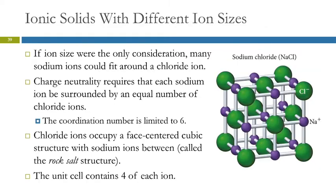Student: The coordination number is 6? Instructor: Yes, the coordination number is 6. The coordination number in the ionic compound is not necessarily the same as in the face-centered cubic unit cell, where it was 12. The problem is we now have two different kinds of atoms. We're not looking at chloride-to-chloride interactions — that would still be 12 — but those are not forces of attraction. We're looking at sodium-to-chloride contact, which is limited to 6. Student: So one chloride ion is in contact with 6 sodium ions? Instructor: Right — 6 sodium ions are in contact with 1 chloride.